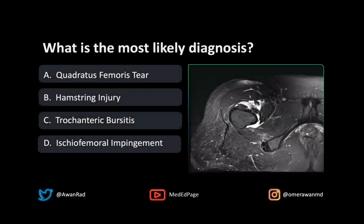Is this a case of a quadratus femoris tear, a hamstring injury, trochanteric bursitis, or ischiofemoral impingement? What's the most likely diagnosis?